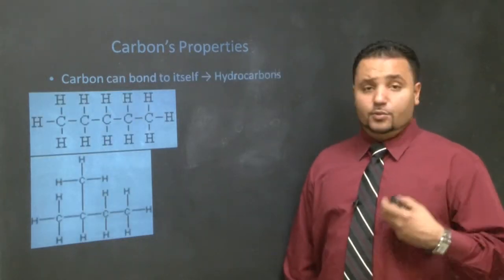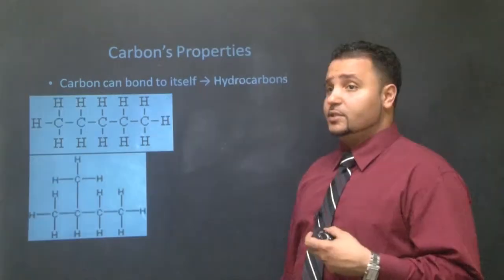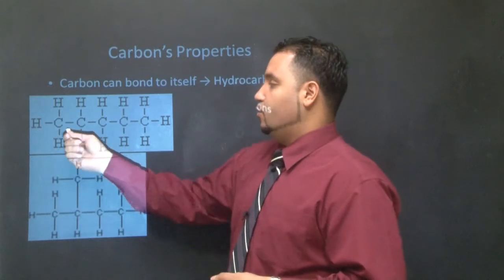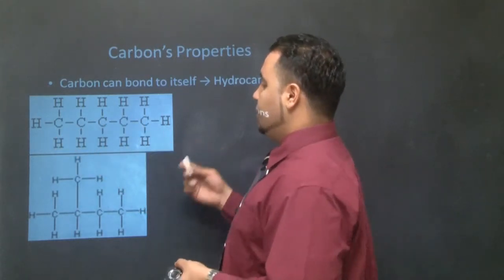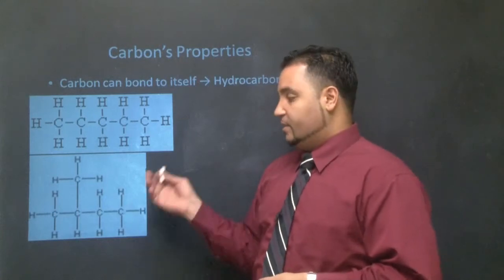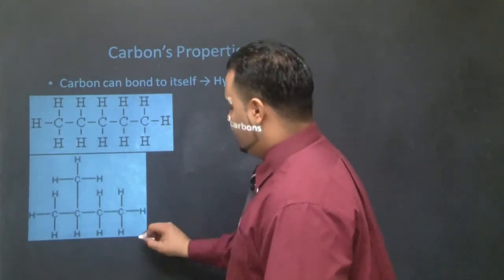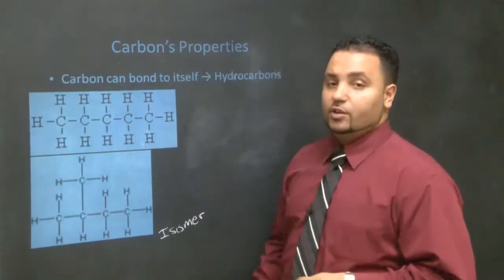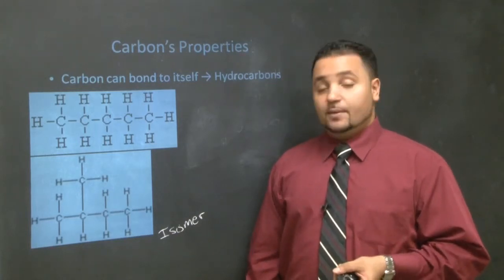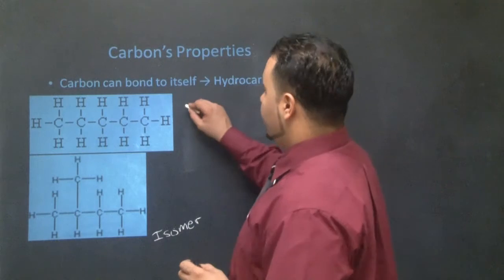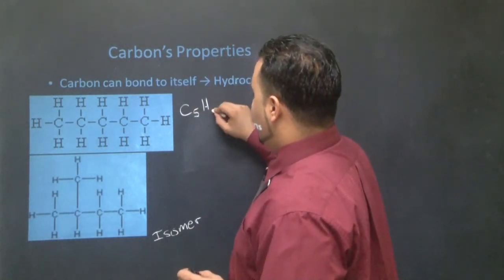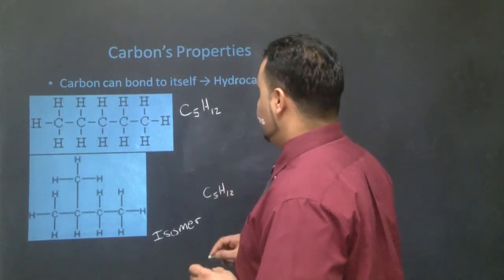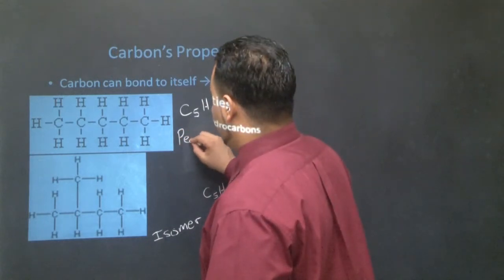Next, carbon can bond to itself and form these really long hydrocarbons. So for example, this is pentane. Now pentane, we just count the carbons. There's one, two, three, four, five. Very simple. This one over here, this is a form of pentane. It's an isomer of pentane. These are isomers. They basically have the same formula, but different structures.